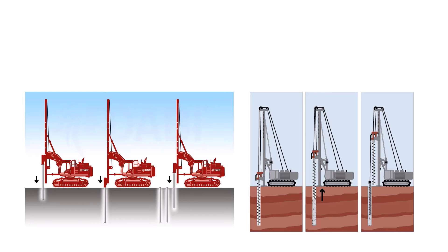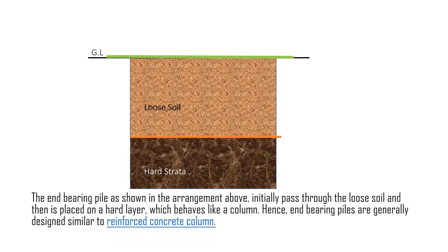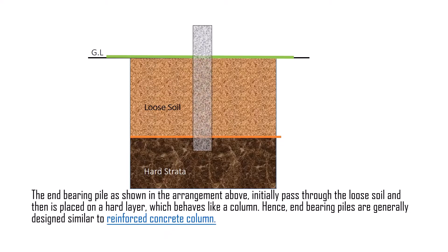A prefabricated pile or an auger pile can be used to construct an end bearing pile. As shown in the arrangement, the end bearing pile initially passes through the loose soil and is then placed on a hard layer, behaving like a column. Hence, end bearing piles are generally designed similar to a reinforced concrete column.